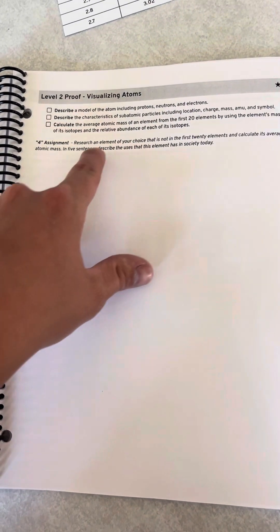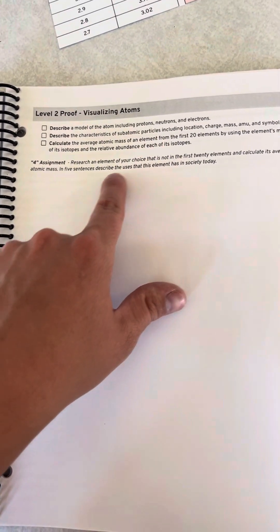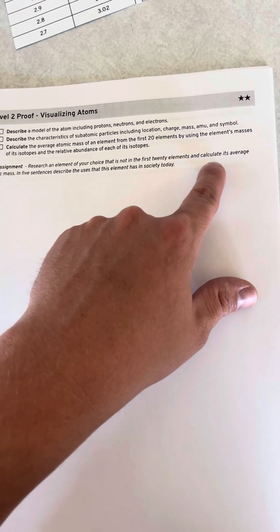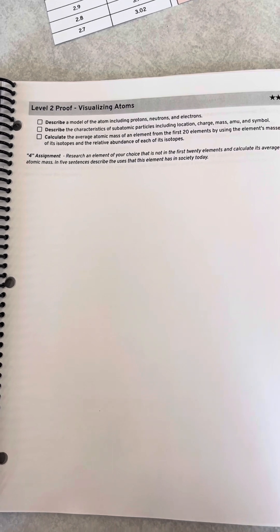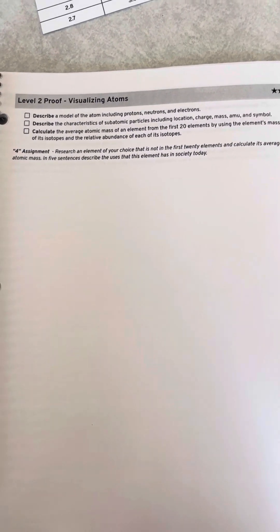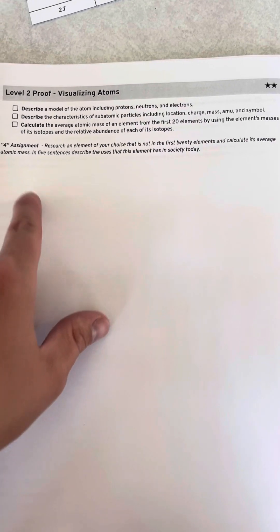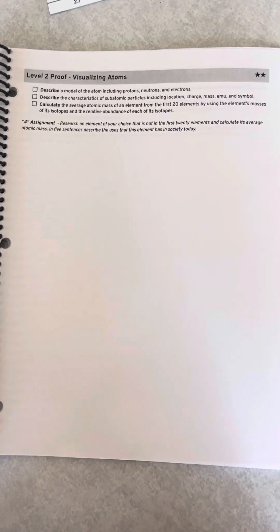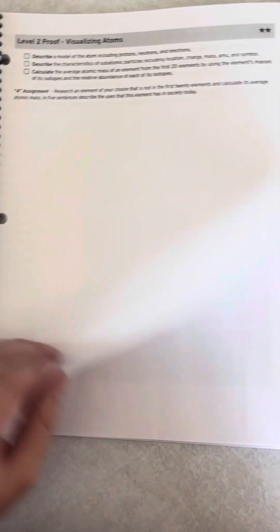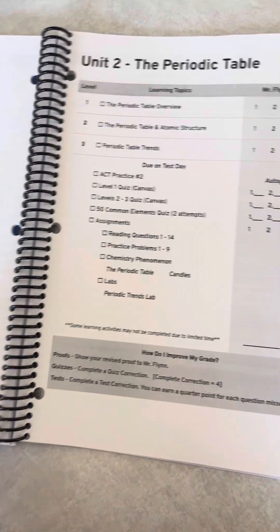So the idea is that the standards are they're having to prove to me that they understand it. And if they want a four, they have to go outside, right? So they're researching an element of your choice that is not in the first 20 elements and calculate its average atomic mass. Because to be proficient, you have to be able to calculate the average atomic mass of the first 20 elements. That's kind of my opinion, 20 elements. Anything above that, that's extra. So find an example. And if they do uranium, they're going to find tons of isotopes and they're going to go, oh, this is a lot more complicated than I thought. And that's the goal is to have them realize, oh, there's more than what Mr. Flint's teaching.